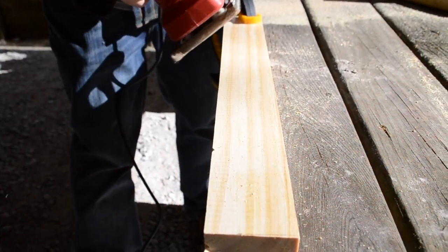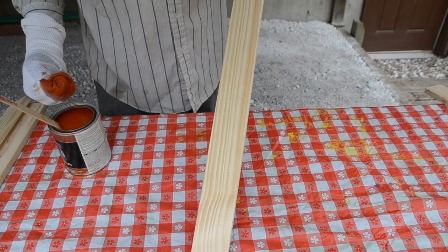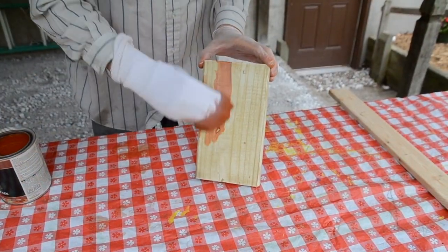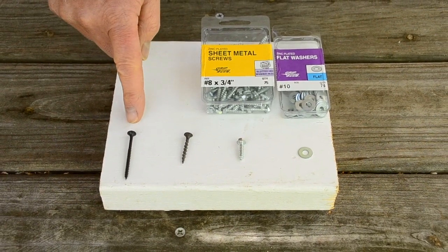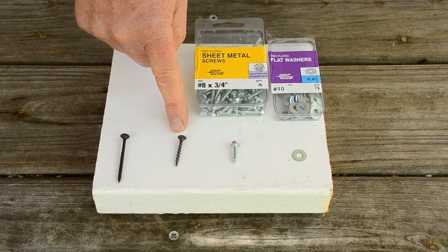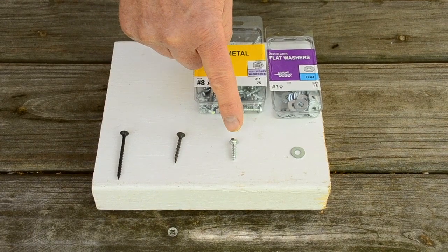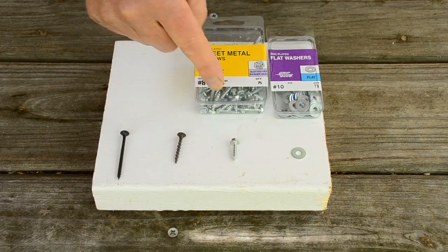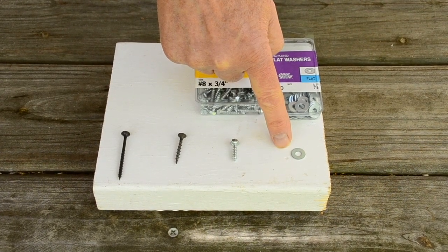Before assembling your antenna you can pretty it up a bit by sanding the rough edges and the corners, and by applying a coat of stain or polyurethane or paint. You'll need two 2 inch drywall screws, a couple of shorter screws, 14 number 8 by 3 quarter inch sheet metal screws and 14 number 10 flat washers.